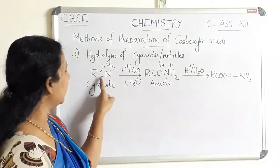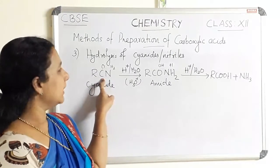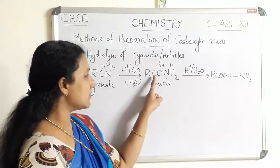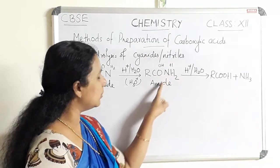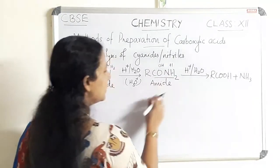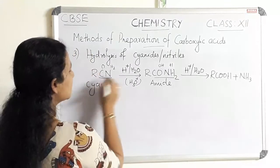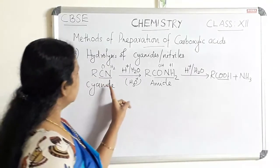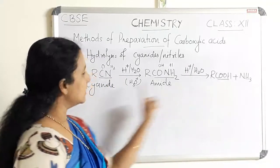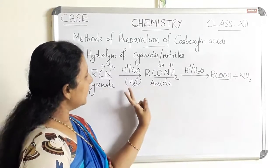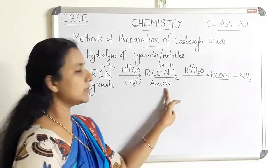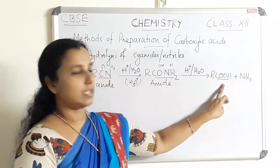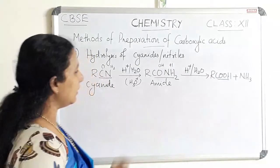Cyanide is the common name; nitrile is the IUPAC name. Cyanide is first converted to amide — CONH₂ is the functional group of amide, CN is the functional group of cyanide, and COOH is the functional group of carboxylic acid. If the reaction condition is weak, the product will be amide. If the reaction condition is strong, we will get carboxylic acid as the end product.